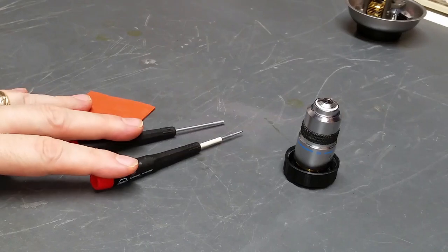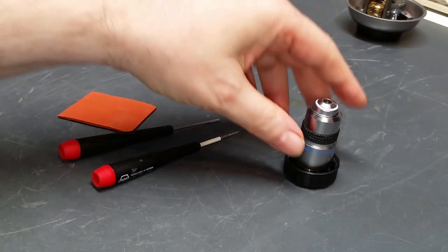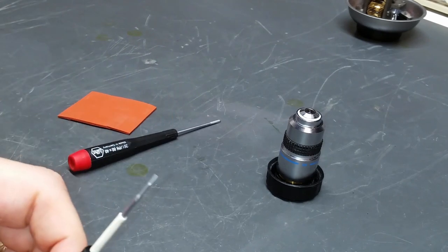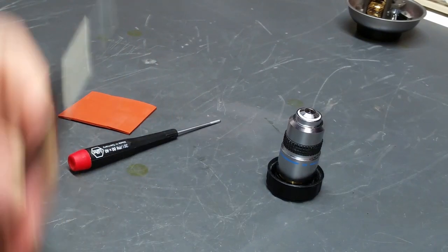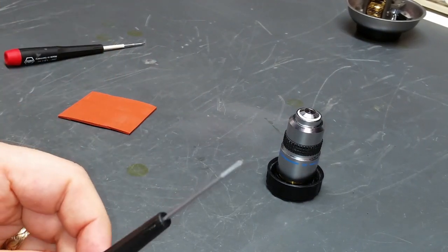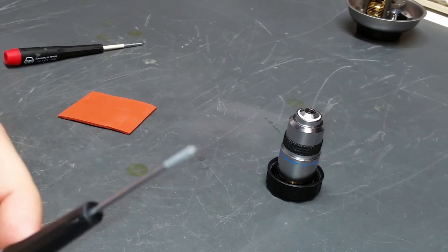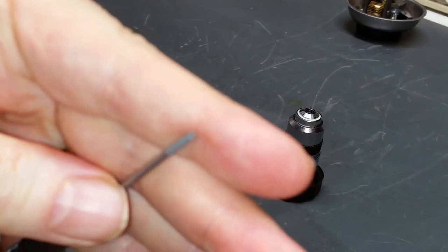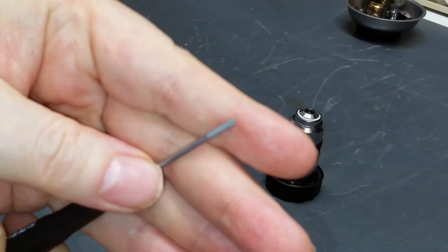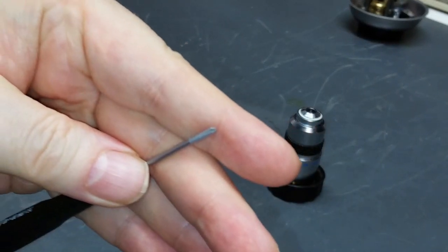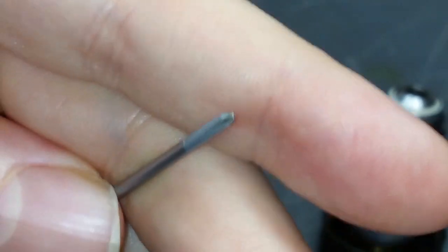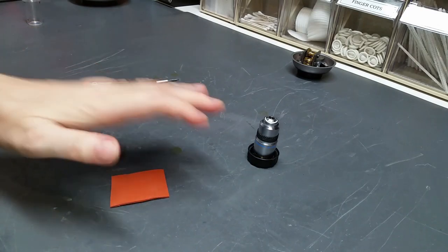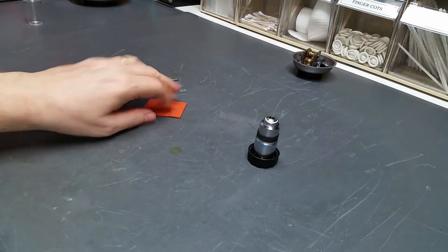Okay I have here a couple of the tools we're going to use to work on this objective. Basically all I have is a very fine-tipped flat-bladed screwdriver, a nice precision cross-point screwdriver. And I have here a little rubber pad and we'll see what that's for in just a bit.